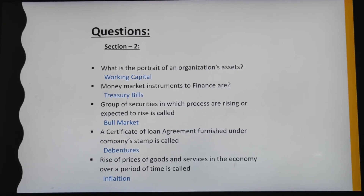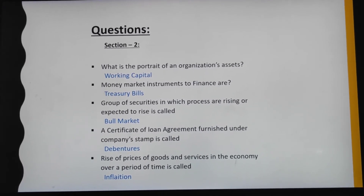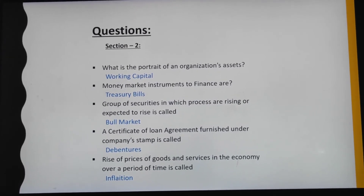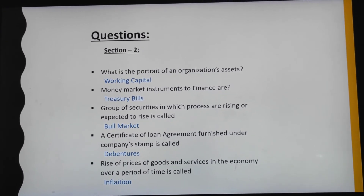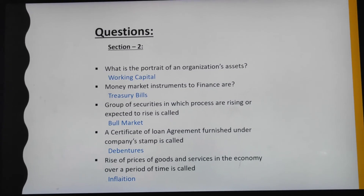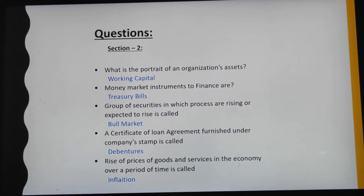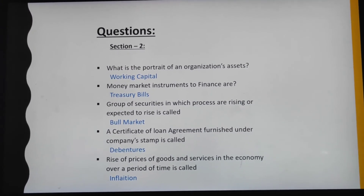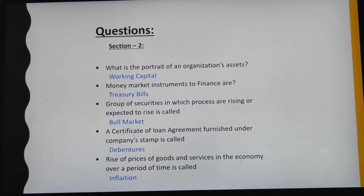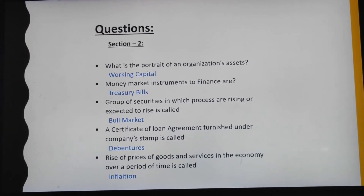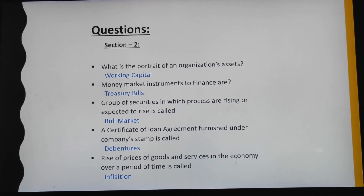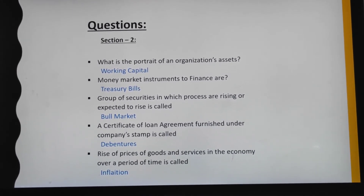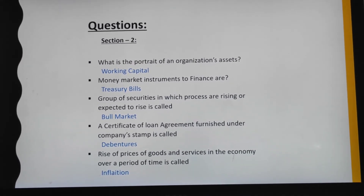Money market instruments used to finance are treasury bills. A group of securities in which prices are raising or expected to raise is called bull market. A certificate of loan agreement furnished under company stamp is called debentures. Raise of prices of goods and services in the economy over a period of time is called inflation.